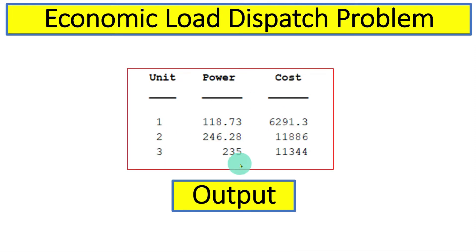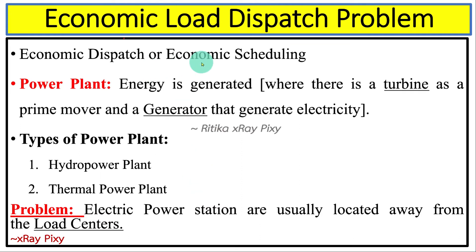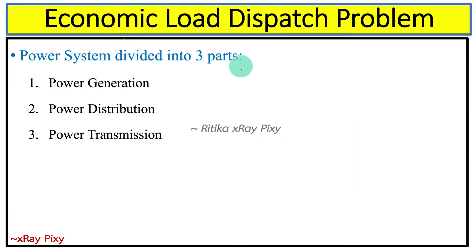Topics covered in this video include: basic introduction about power systems, power plants, and load centers; the economic dispatch problem; equality and inequality constraints; and how to solve this problem step by step using a numerical example. Power plants are used to generate electricity using a turbine as a prime mover and a generator. Electric power stations are usually located away from the load center, and the power system is divided into three parts: power generation, power transmission, and power distribution.